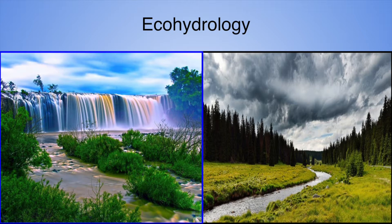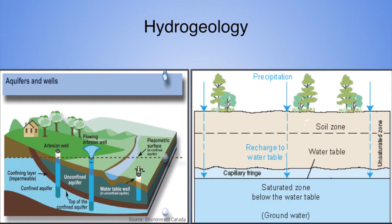Ecohydrology is the interaction between water and the environment — the study of how water affects ecological patterns and processes. Hydrogeology is the study of groundwater, including aquifers and the movement of groundwater and contamination.